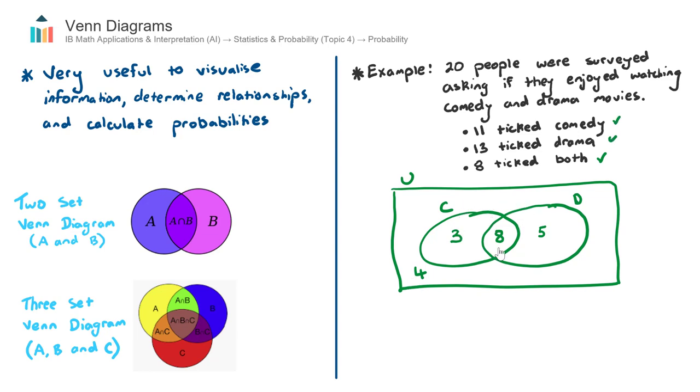That's our completed Venn diagram. I now want to go through a couple of probability questions. In set notation, let's look at this first one. I want to have little n and then a capital C. And this stands for the number of people that ticked comedy. It isn't a probability question yet. It's just simply asking for the number. The number of people that tick comedy will be this 3 plus this 8, all the people inside the comedy set. And that is equal to 11. The next one, the number of people that ticked both comedy and drama, that will be equal to the number in the intersection here. And that's this 8 here.